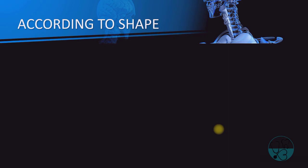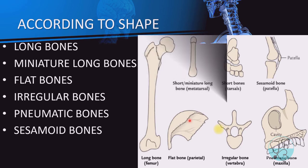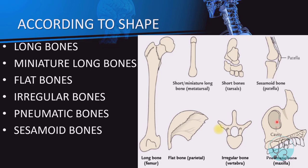Flat bones are shallow plates; examples include skull bones, ribs, sternum, and scapula. Irregular bones have no definite shape; examples are vertebrae and hip bones. Pneumatic bones are very light due to hollow spaces and are mostly found in the skull; examples are maxilla, sphenoid, and ethmoid. Sesamoid bones are commonly asked in viva exams; examples are the patella, pisiform, and fabella.